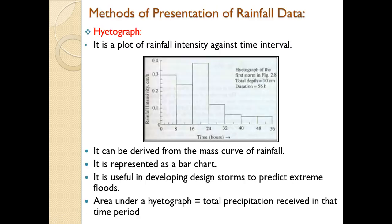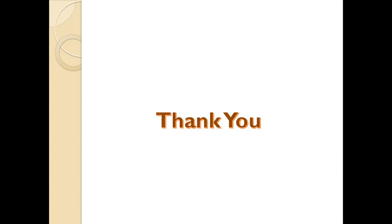Last is point rainfall. In this case, rainfall is recorded in the form of points — it is a plot of amount of rainfall versus duration in terms of years. Year-wise, it is recorded in the form of point rainfall. These are the various methods of presentation of rainfall data. Thank you.